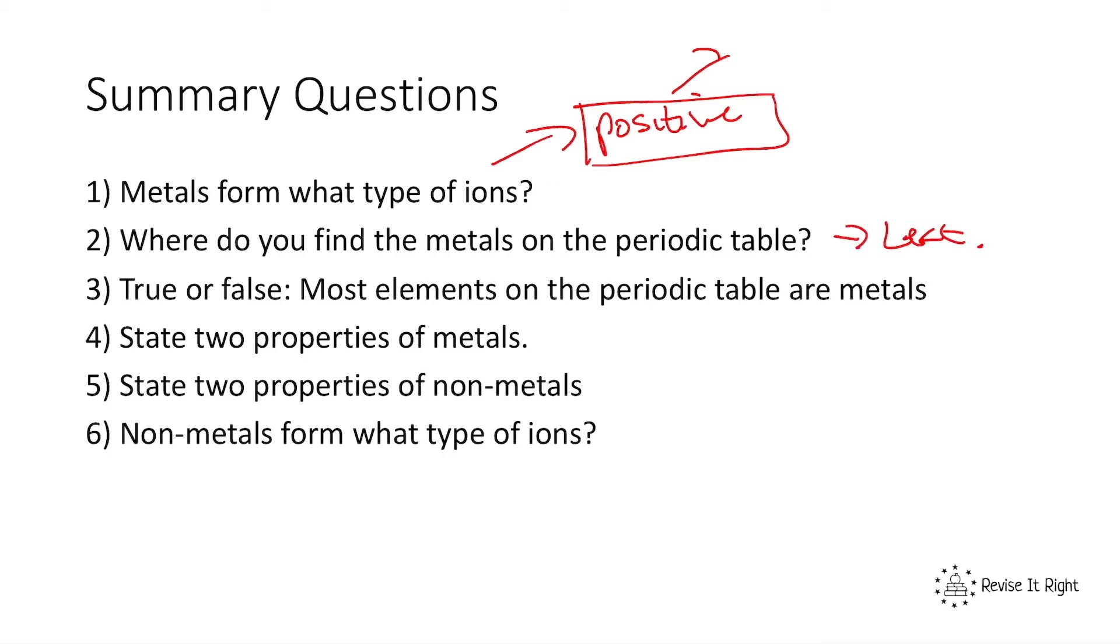True or false: Most elements on the periodic table are metals? That is in fact true. State two properties of metals. They are good conductors of electricity—that's one property. We can also say they're strong, have high boiling points, are malleable, or are shiny.